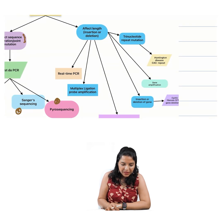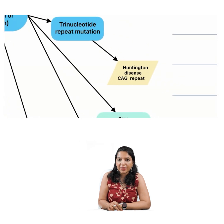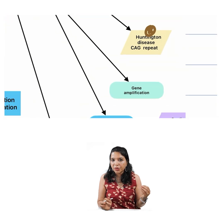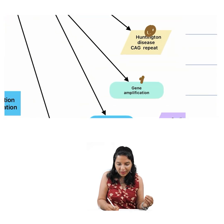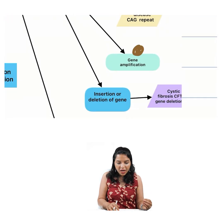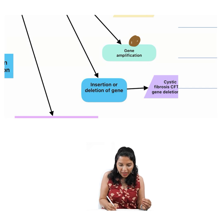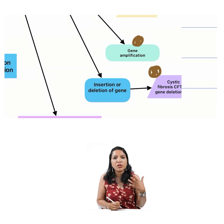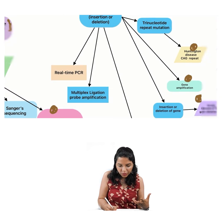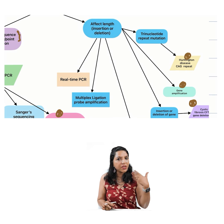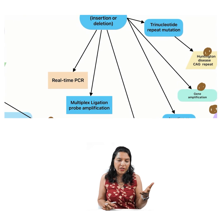Next is something which affects the length, that is insertion or deletion. The various scenarios that you can get are a trinucleotide repeat mutation — for example, Huntington's disease can be asked — or any case of gene amplification, or any case of insertion or deletion of a gene like cystic fibrosis. In that case, we have to use a different set of techniques.